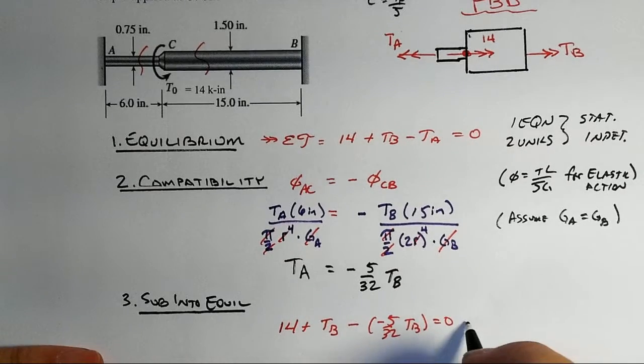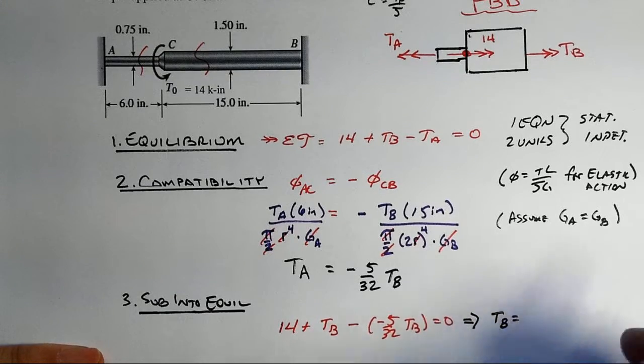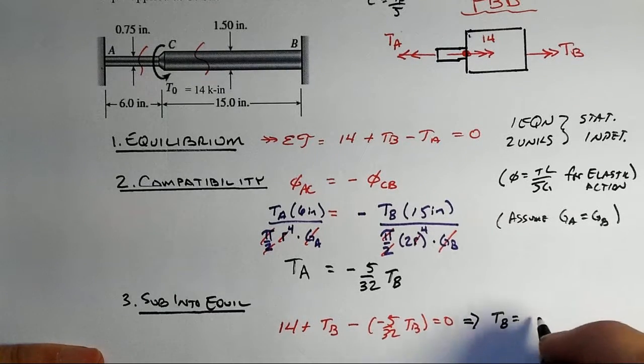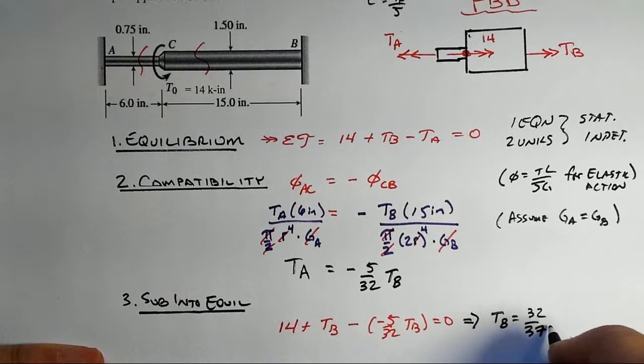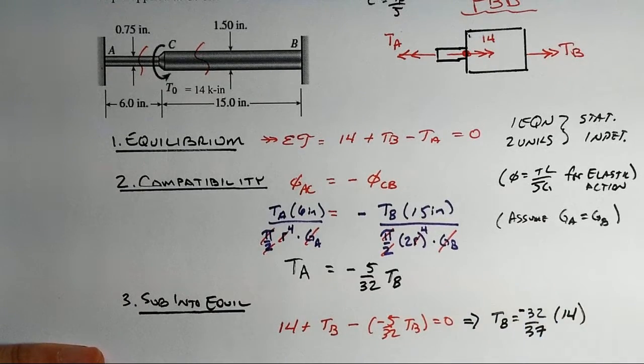And we will find out then that TB will be equal to 32 over 37 times the 14, and there's a negative sign there.